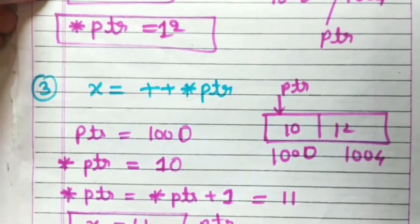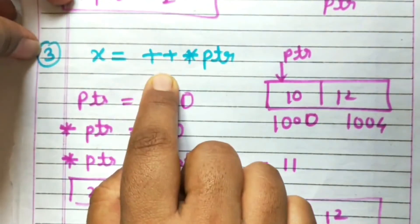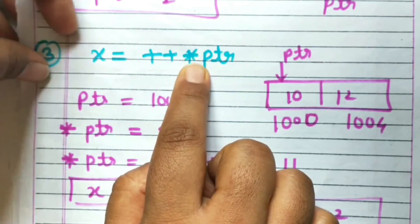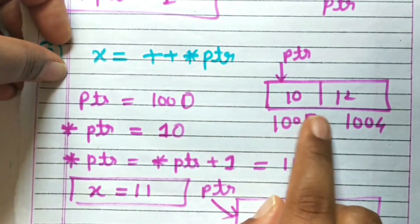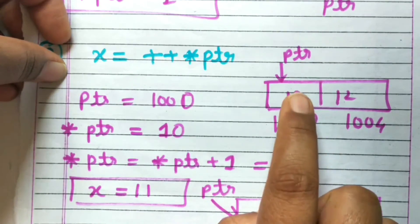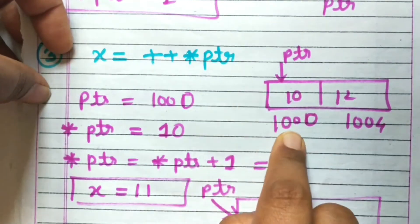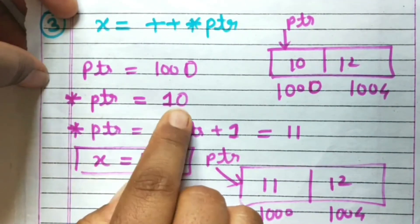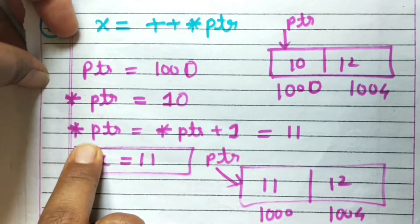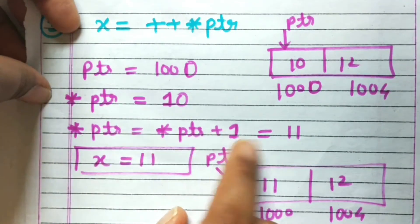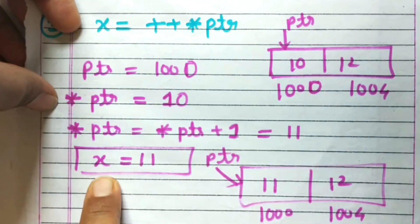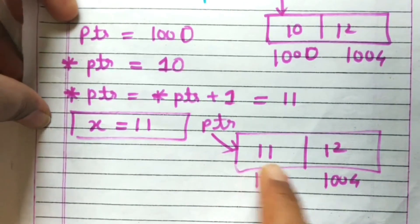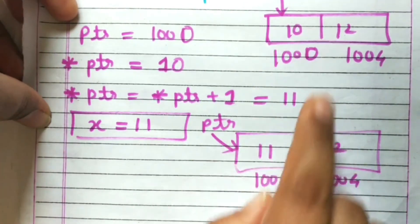Next: x = ++*ptr. The increment operation is performed on the value pointed by PTR. Previously, the value pointed by PTR is 10 and the address pointed by PTR is 1000. After incrementing: *PTR = *PTR + 1 = 11. So x = 11, and in the memory representation, the value 10 at address 1000 is replaced by 11.